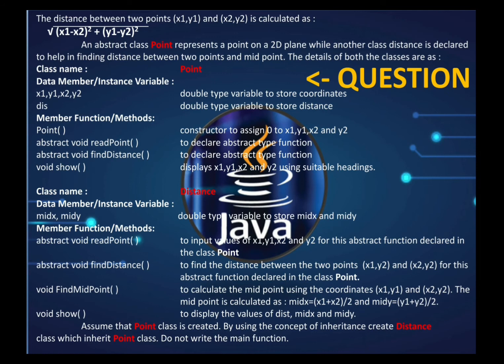From the Distance show() function we call the Point show() function using the super keyword. In the exam, the Point class is assumed to already exist — you only need to create the Distance class. I will show you both classes and the main function for completeness, but in ISC you are not supposed to write the main function or the Point class.